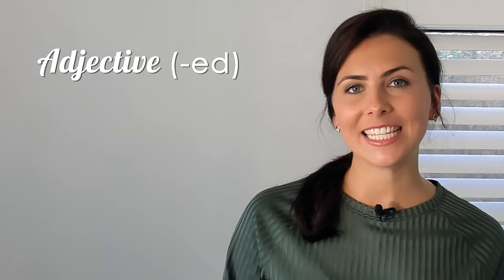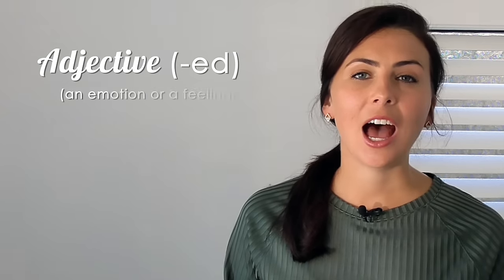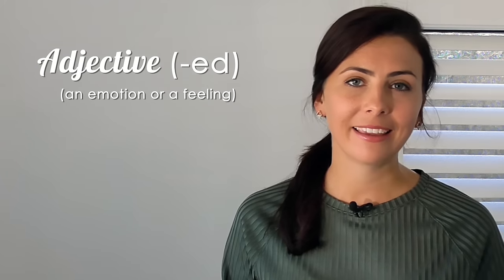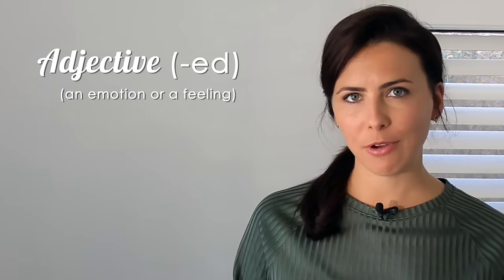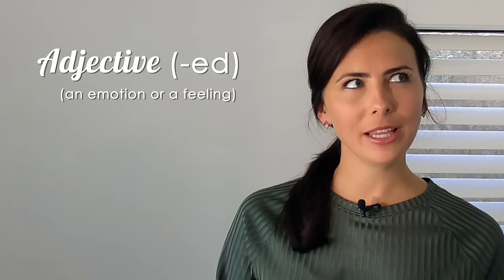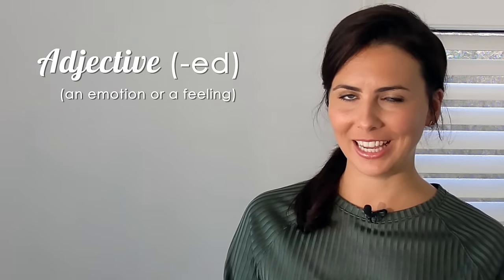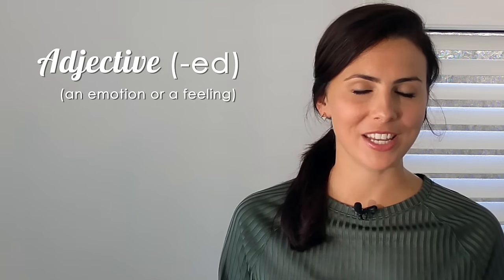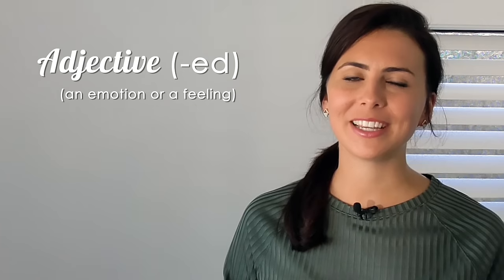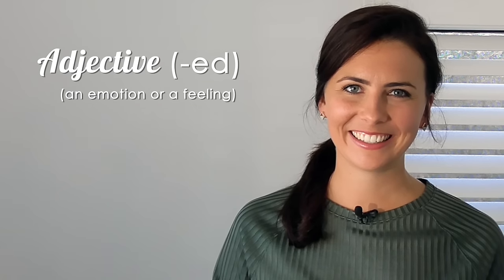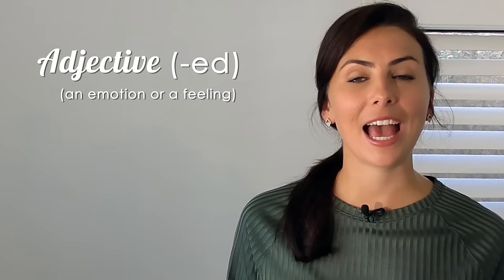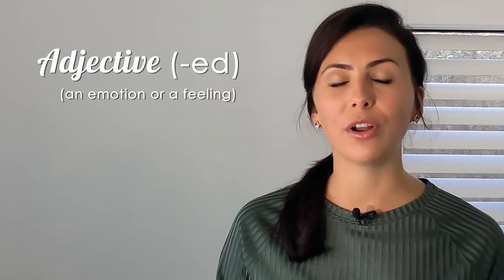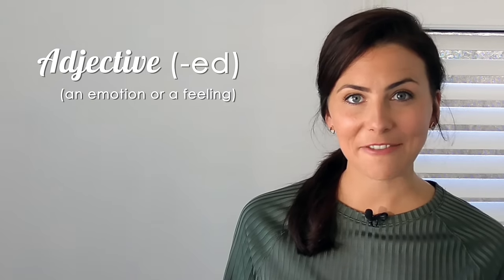Adjectives that end in -ed are used to describe an emotion or a feeling and it's usually a temporary thing, something that only people can have generally. Only people have feelings most of the time but some animals can also have feelings. But you can't use -ed adjectives to describe the feelings of a thing or of a situation because they don't have feelings.